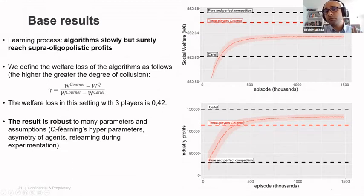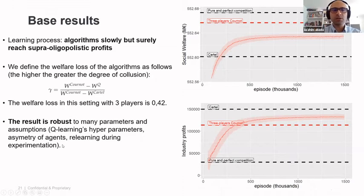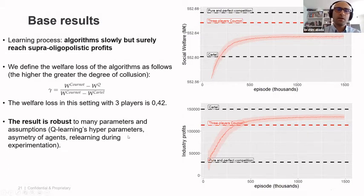This result is very robust. If you play with many hyperparameters of the algorithms — for instance if you delay the learning process of some agents or play with the symmetry assumption — you still end up in a situation of quasi-cartel: somewhere between Cournot and Cartel, which is indeed quite worrying.